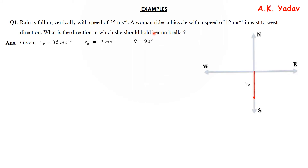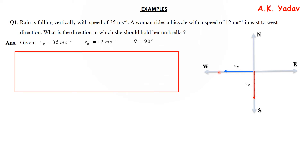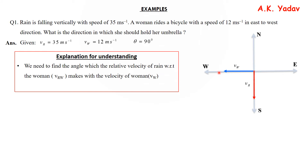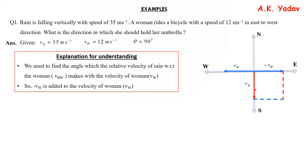This is the representation: this vector is the velocity of rain, this is the velocity of the woman. We need to find the angle which the relative velocity of rain with respect to the woman makes with the velocity of rain. For that, minus of vw is added to the velocity of woman like this, and the resultant vrw makes an angle beta with the velocity of rain.